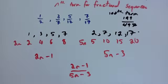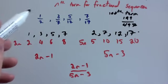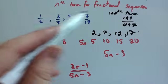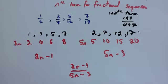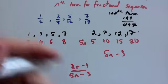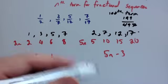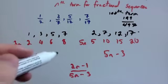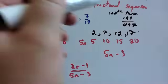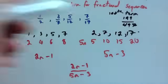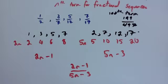So that's how to find the nth term for fractional sequences. You consider the top line and the bottom line separately, then work out the nth term and put it together as a fraction, and use that to work out any term you want.